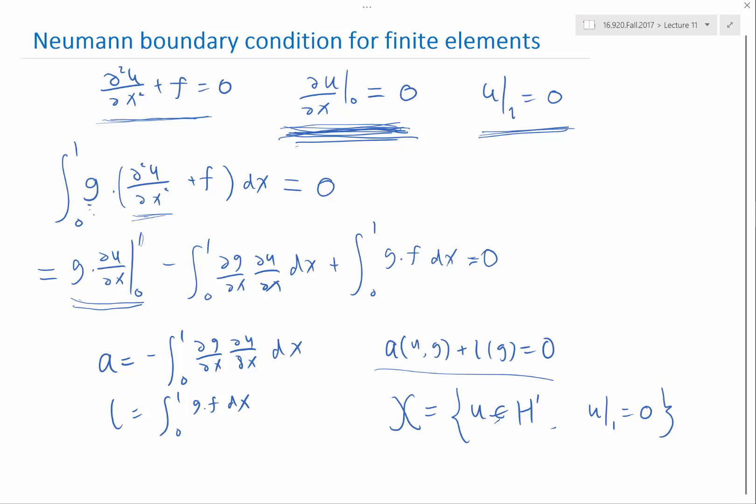the 0 Neumann boundary condition is actually the natural boundary condition for this particular weak form. So if you just solve the weak form without enforcing any boundary condition on the left, you automatically get that boundary condition satisfied. That's right.